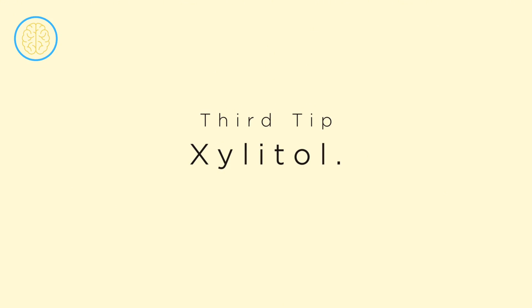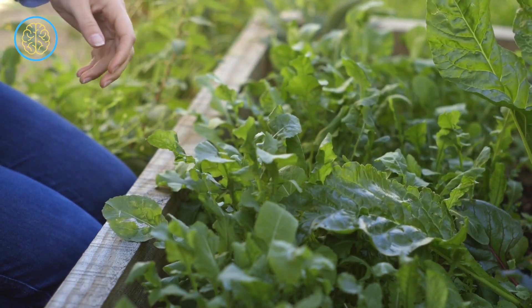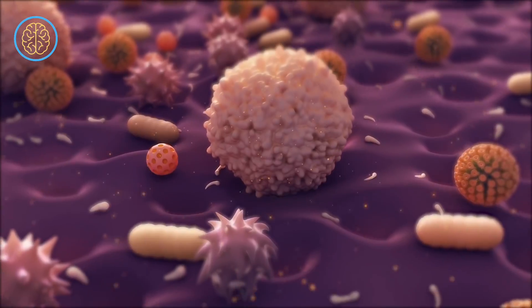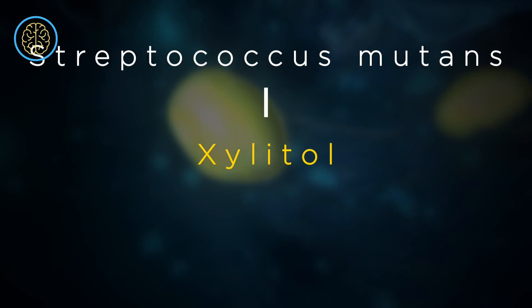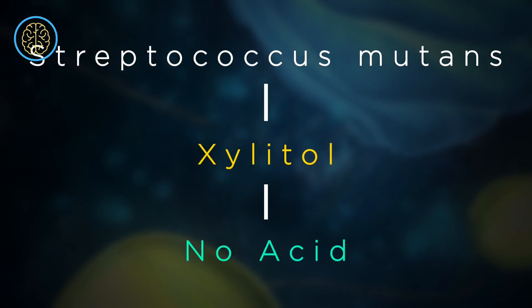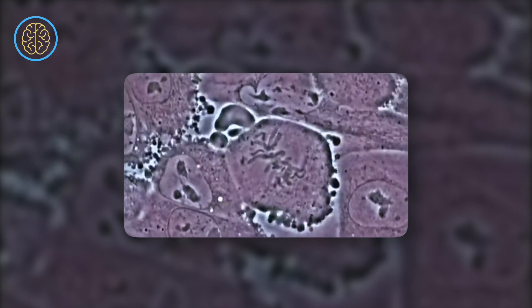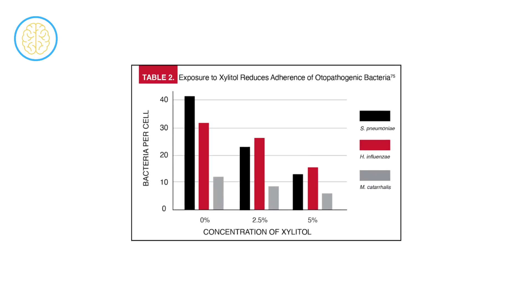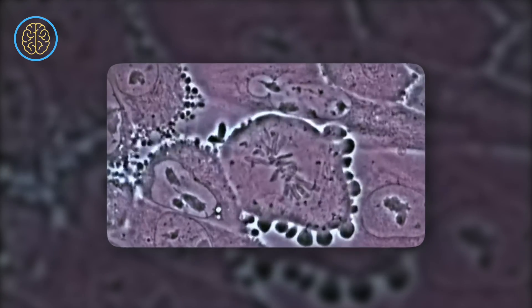The final tool for maintaining optimum oral health is xylitol. Derived from plants, xylitol is a sugar with fewer calories and minimal impact on blood sugar levels. It happens to be Streptococcus mutans' favorite food. However, when Streptococcus mutans consumes xylitol, they lose their ability to produce the acid that demineralizes your teeth. Additionally, xylitol has the ability to kill and inhibit the growth of Streptococcus mutans. This makes xylitol an exceptional solution for shielding you from cavities, bad breath, and ensuring overall oral health.